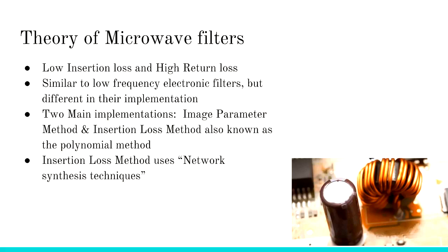In the microwave filter circuit, elements such as transmission lines must be used in place of inductors and capacitors used at lower frequencies. There are two main types of implementations for a microwave filter: one is the image parameter method, and the other is called the insertion loss method.